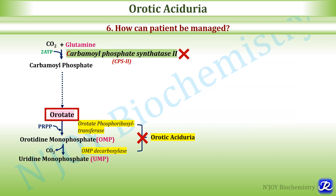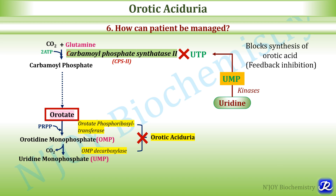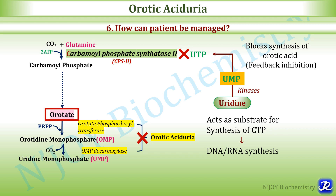How can this patient be managed? The patient can be managed by giving uridine. Uridine is converted to UMP by kinases present in cells, and UMP is further converted to UTP, which inhibits carbamoyl phosphate synthetase 2 by feedback inhibition. This reduces production of orotate, thereby treating the condition. Uridine supplementation also acts as a substrate for synthesis of CTP, which is helpful for DNA and RNA synthesis.